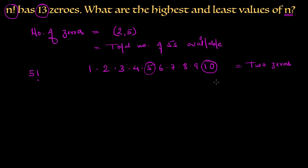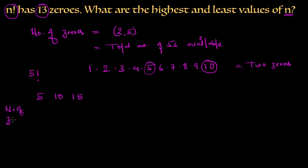Similarly, we continue through multiples of 5 until we reach 13 zeros. At 5 factorial we have 1 zero, at 10 factorial we have 2 zeros, at 15 factorial we have 3 zeros — because we're at the third multiple of 5, giving us 3 fives. At 20 factorial we have 4 zeros.